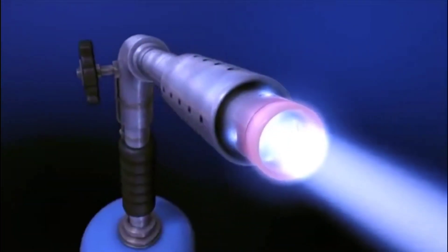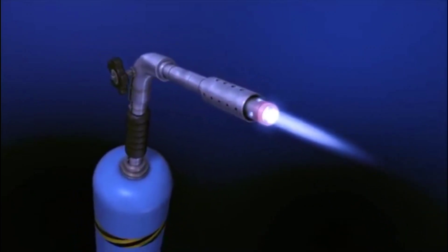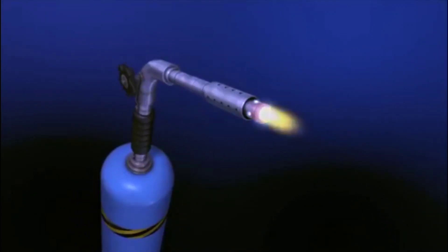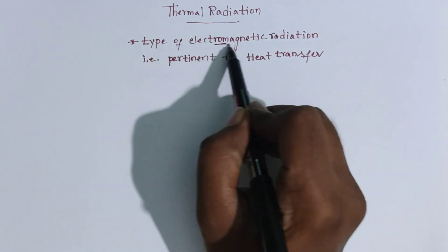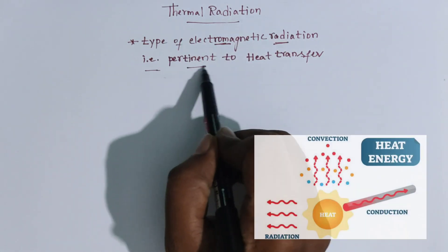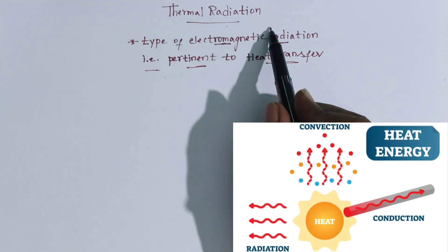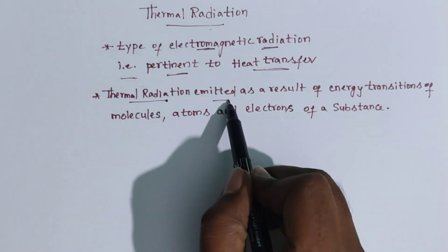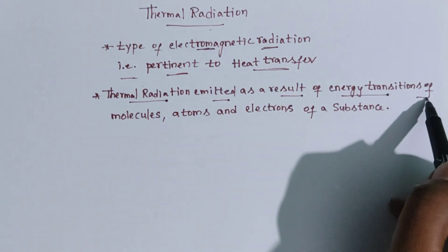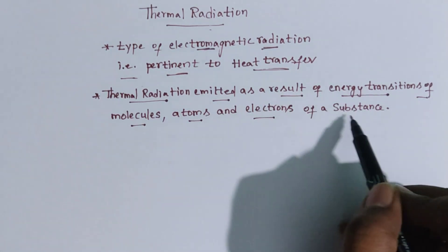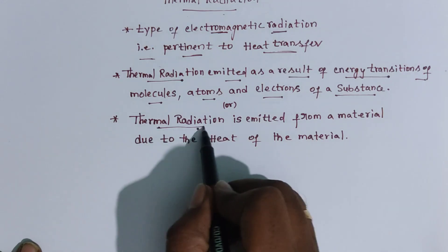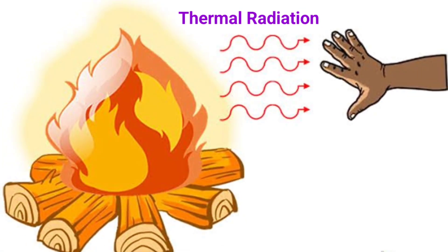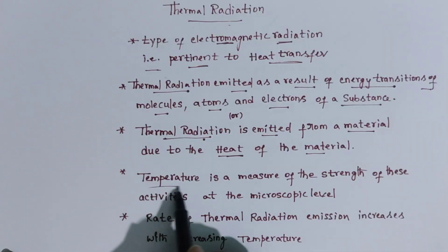As objects grow hotter, they radiate energy with a shorter wavelength, changing color before our eyes. Thermal radiation is a type of electromagnetic radiation pertinent to heat transfer. Thermal radiation is emitted as a result of energy transitions of molecules, atoms, and electrons of a substance. It is also defined as radiation emitted from a material due to the heat of the material.